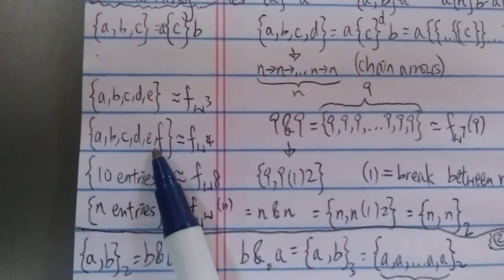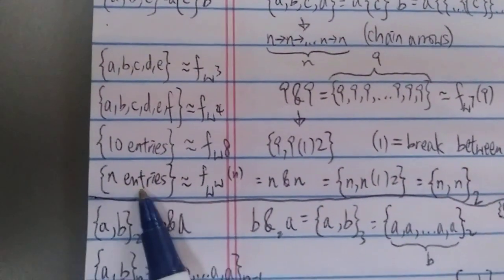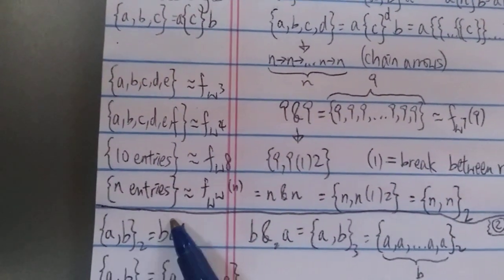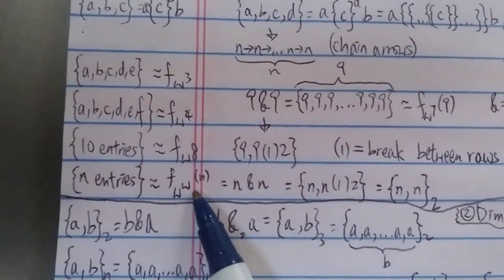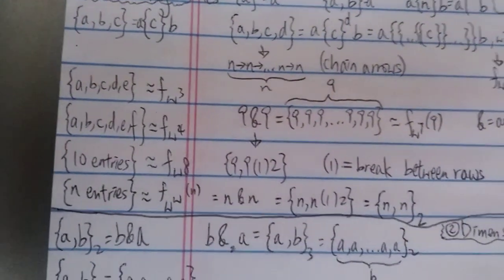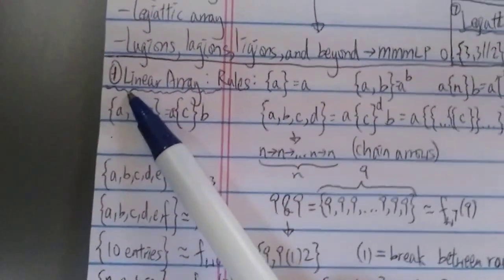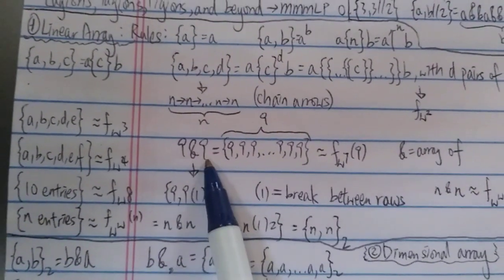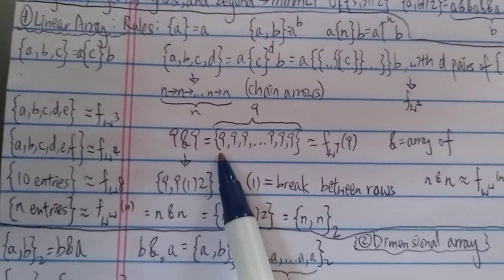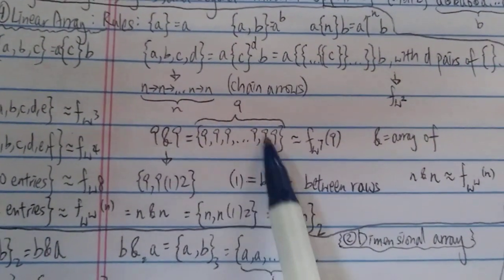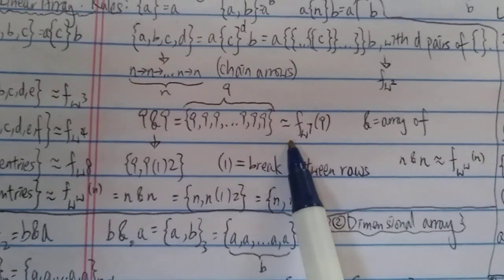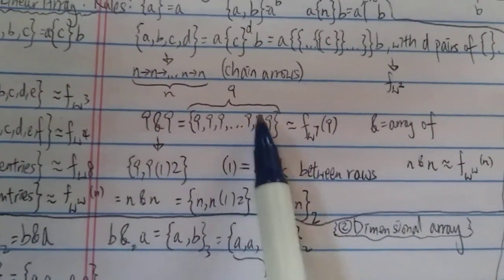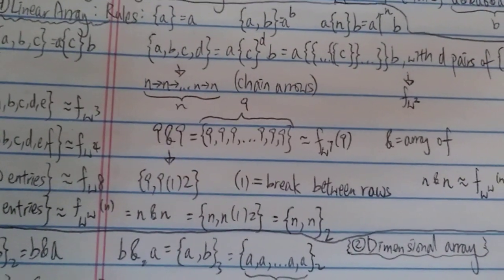Of course you can add one more entry — {a,b,c,d,e} — six entries, ten entries, or even n number of entries. N entries grows at about as fast as f of omega to the omega, so really fast, way beyond chain arrows already — and this is still the first level of BEAF. There's also this symbol here: {9 & 9} basically means nine nine nine...nine with nine entries, and this grows at around f of omega to the power of 79. Pretty crazy already, way way beyond Graham's number.